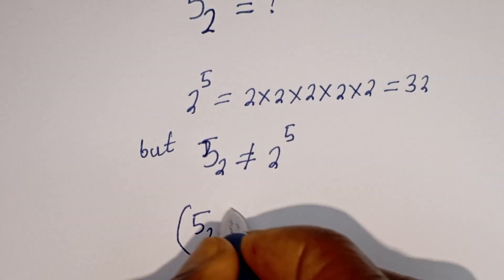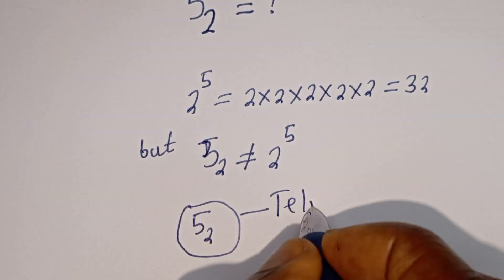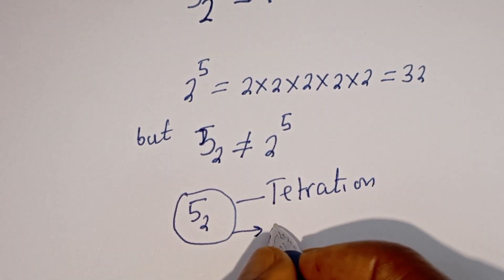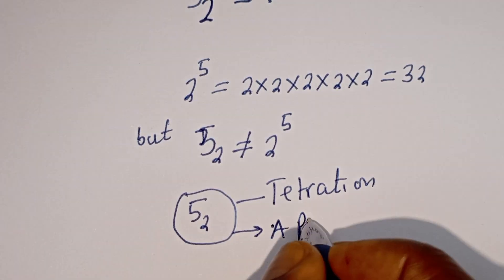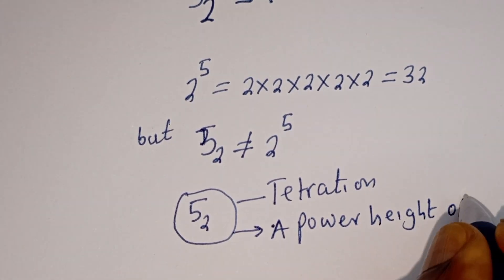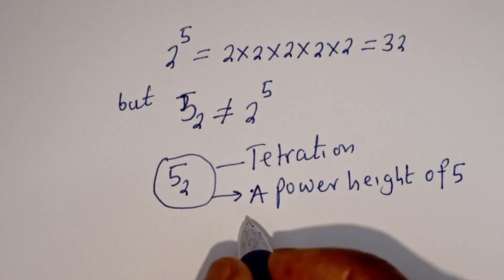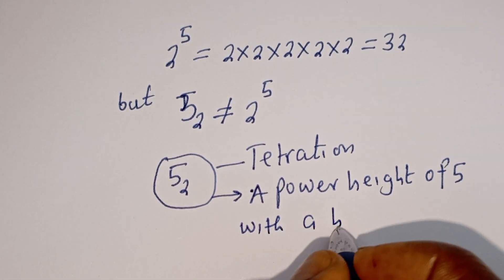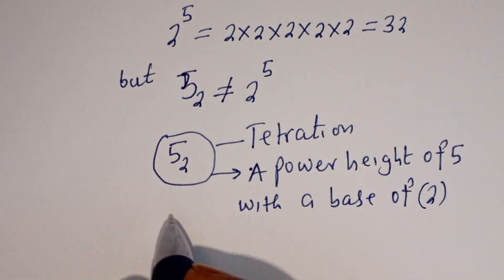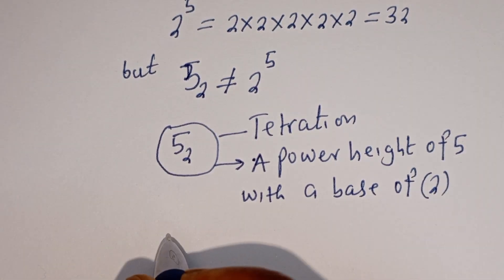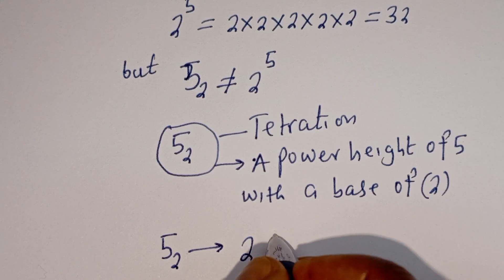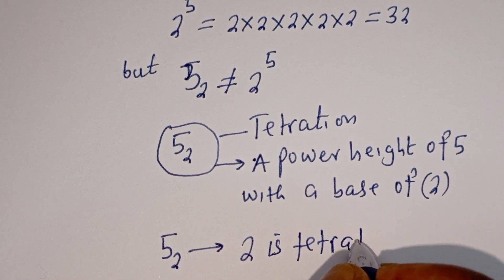All of this is called tetration, which simply means a power height of five with a base of two. This equation simply means two is tetrated to five.